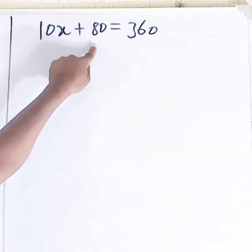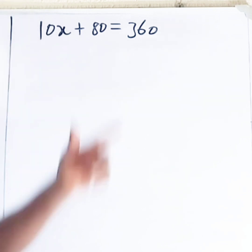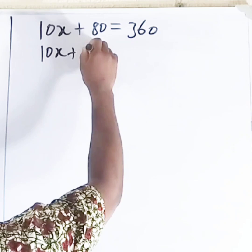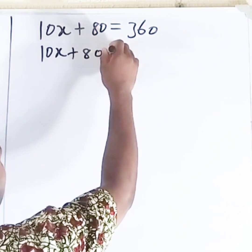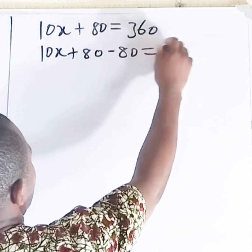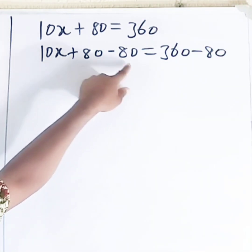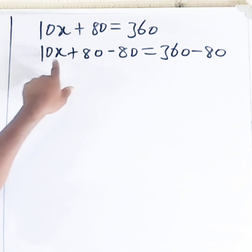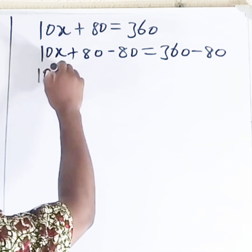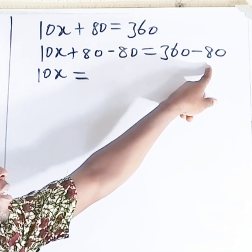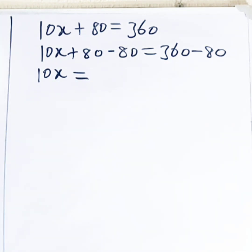So we need to remove this 80, therefore we subtract 80 from both sides. Then 80 minus 80 gives you 0, so we have only 10x. 360 minus 80, that will give you 280.